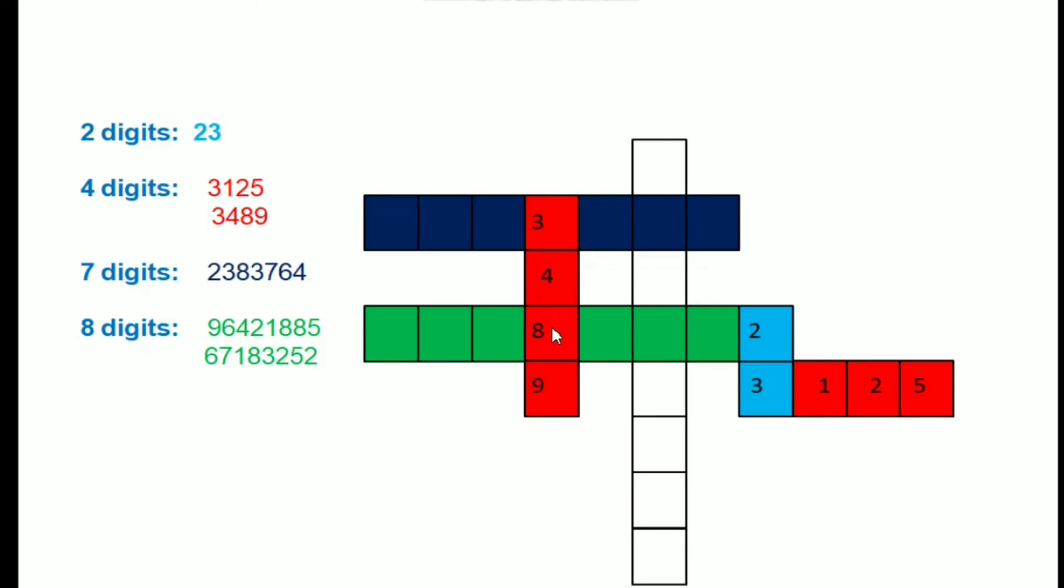Now the next number is the seven digit number. It will go in seven horizontal boxes - you can count it also: one, two, three, four, five, six, seven. So naturally the seven digit number will sit in the horizontal boxes.